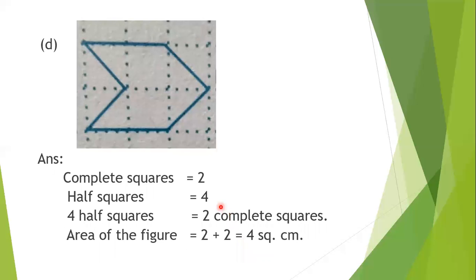Now the next figure has two complete squares — one here, one here, so one plus one equals two complete squares. At the same time it has four half squares: one, two, three, four. Four half squares make two complete squares. So two plus two equals four — the area of this figure is four square centimeters.